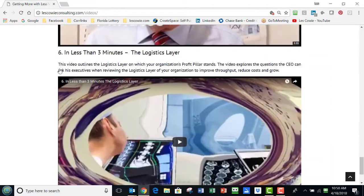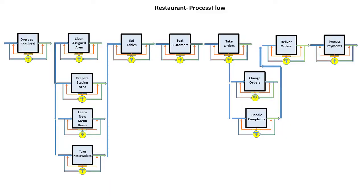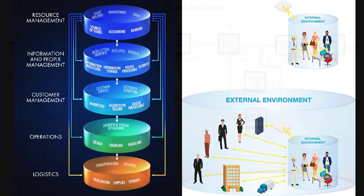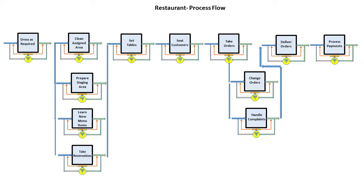In this session I want to examine the process layers. In the last section, the executive required his functional manager to look at each of the departments in his organization and his particular functional layer, and to examine the internal and external environment of each department. That is so that in this section the executive could then chart the process flow within each department.